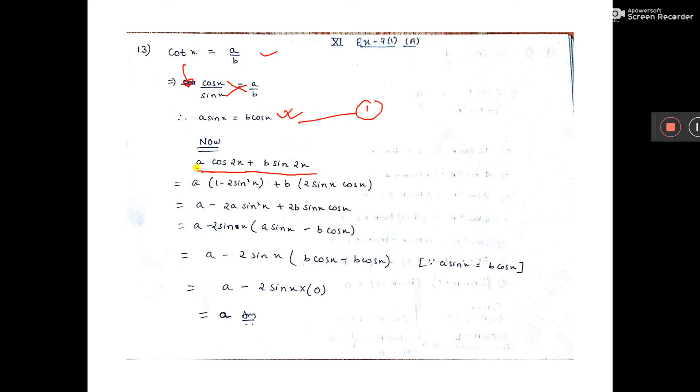Now the given condition you take. Cos 2x formula is 1 minus 2 sin square x, and sin 2x formula is 2 sin x cos x.